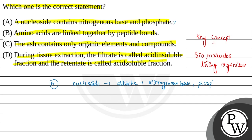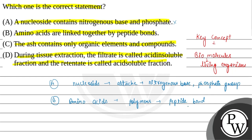Statement B दे रखा है: amino acids are linked together by peptide bonds। Amino acids polymers बनाते हैं, और इन polymers के बीच जो bond पाया जाता है उसे peptide bond कहते हैं। Peptide bond बनने के बाद ये proteins का formation करते हैं। तो Statement B यहाँ पर सही होता है।